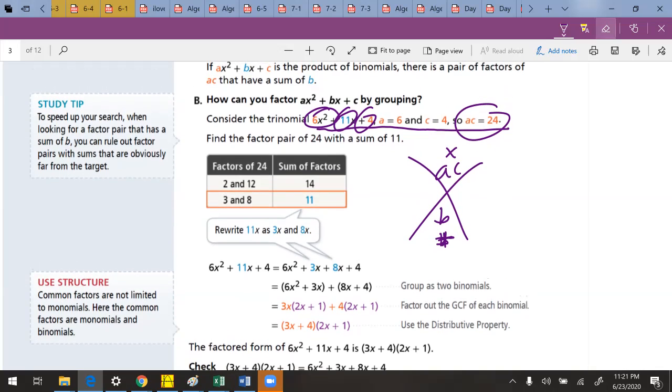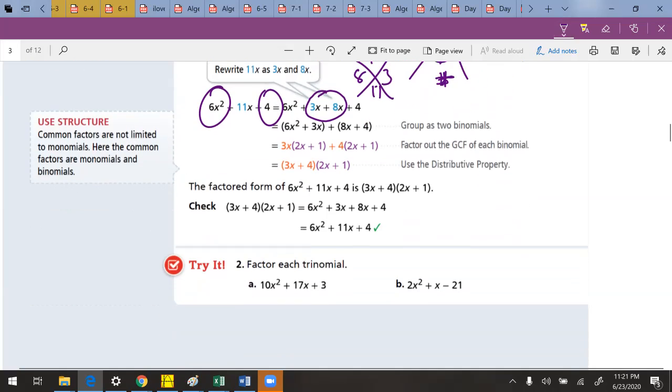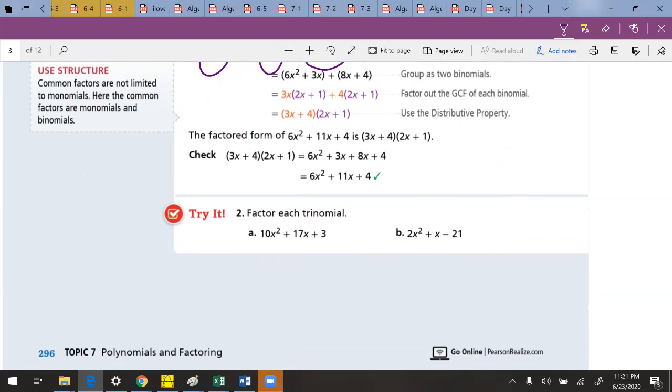So notice this. In this example right here, we're now considering two numbers that multiply to 6 times 4. So 24 is going to go on the top, and on the bottom, it's going to be 11. And that's going to be 8 and 3. Notice how now we have to expand the middle to then group up two terms at a time. Follow along, because I'm going to do this one right here, and I'm actually going to do it on here, as a matter of fact.